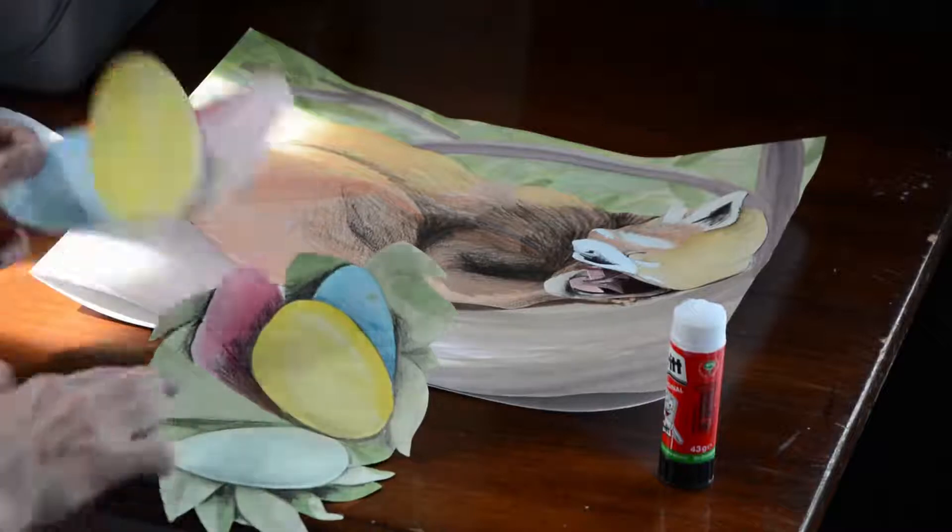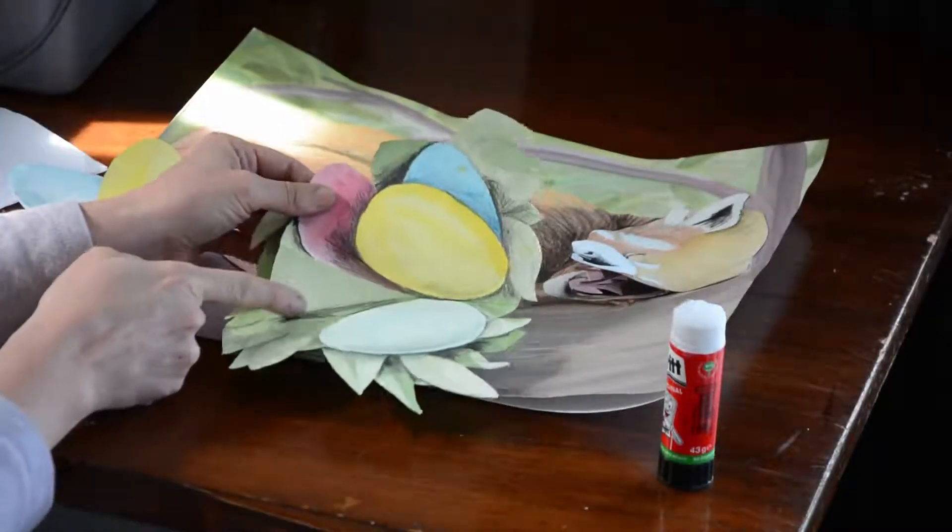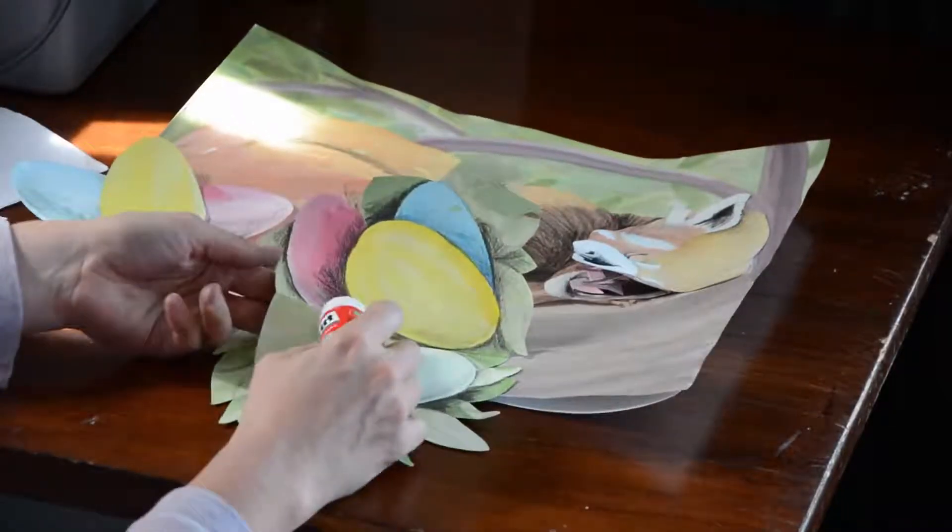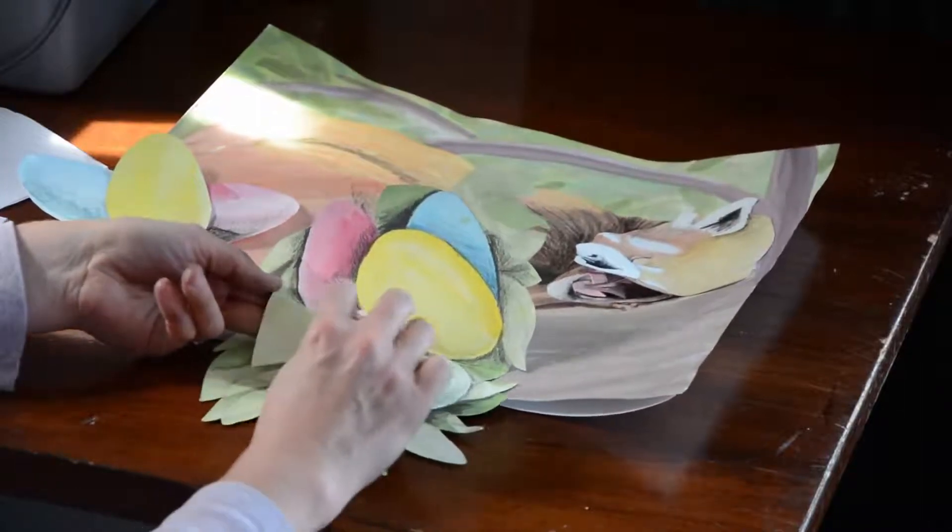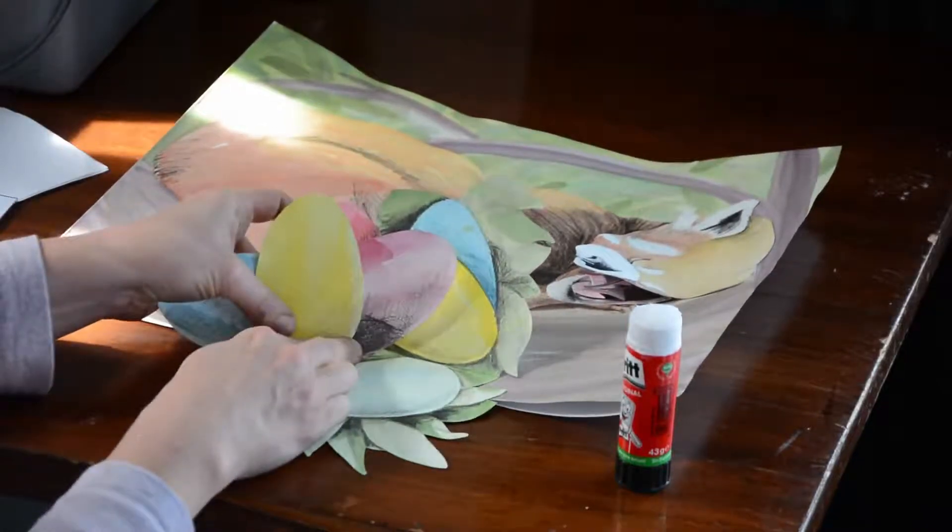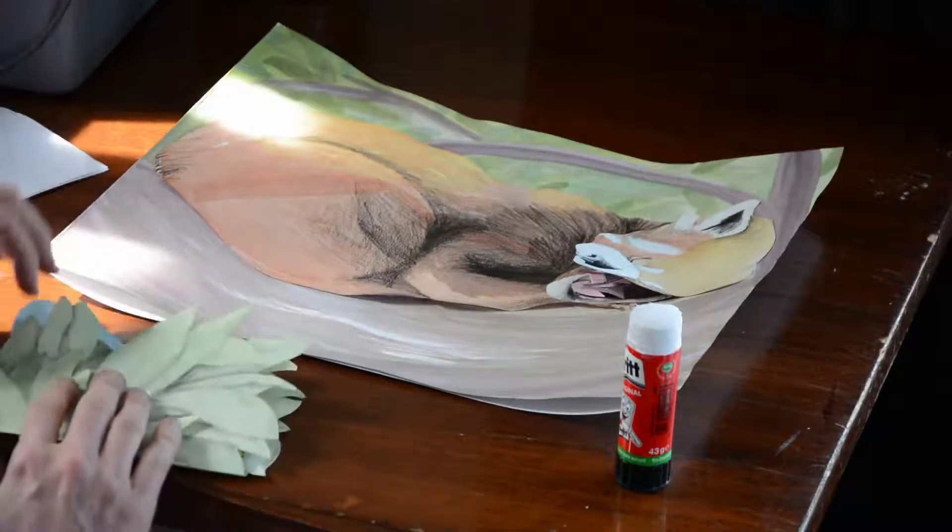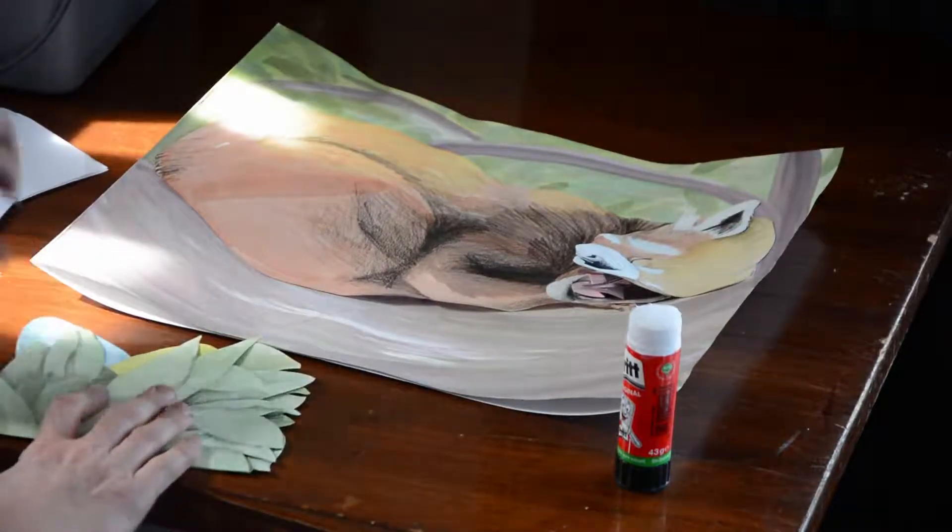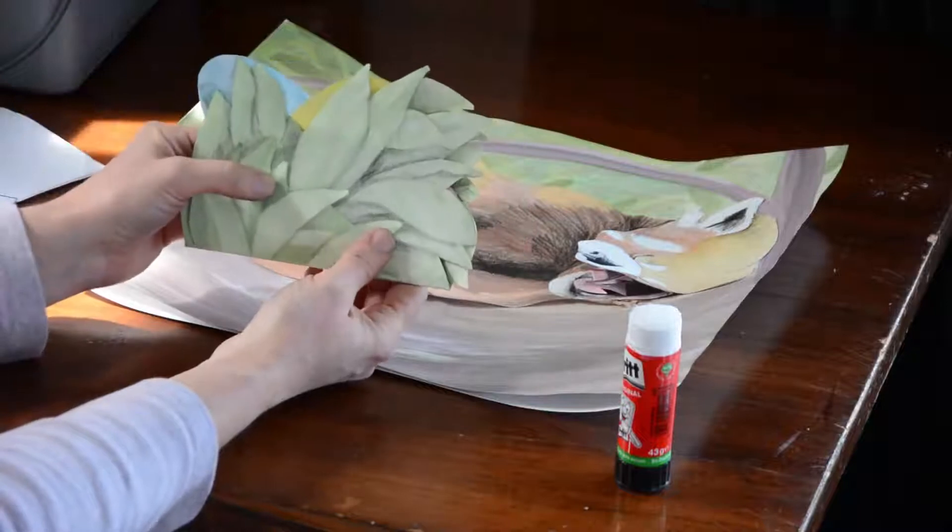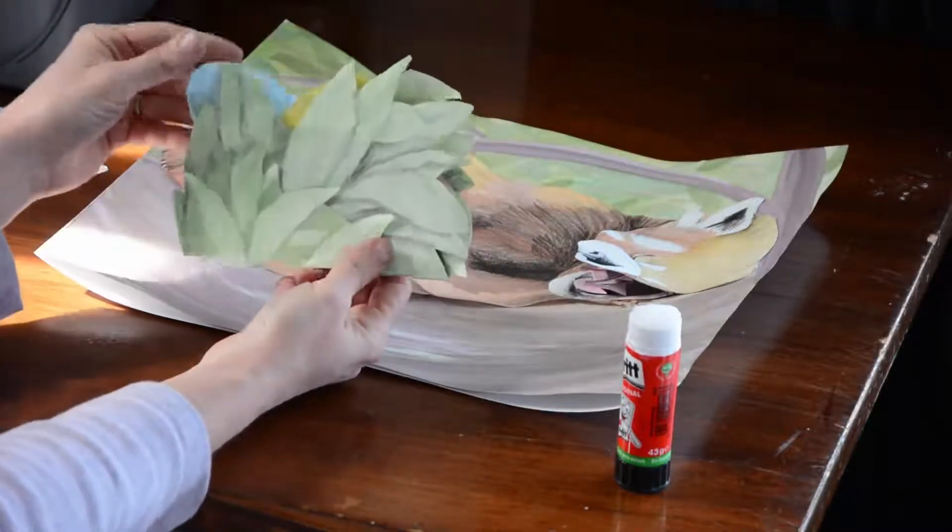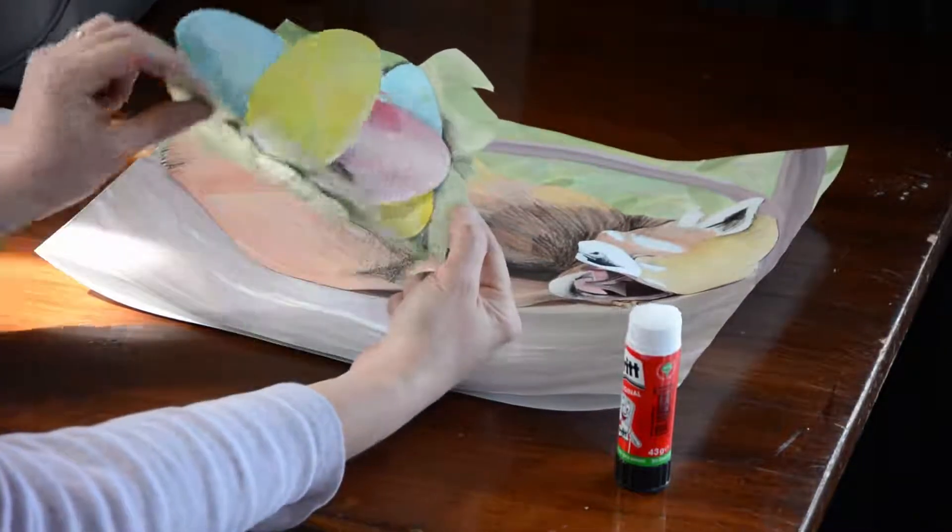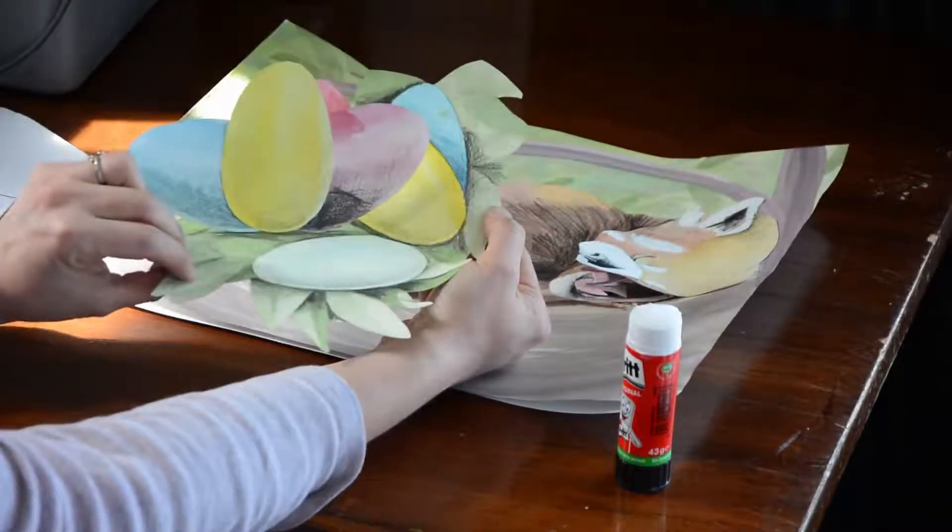Next my Easter eggs will be glued to this little face here. Now I want my eggs to be just barely popping up from the grass here, so I've made it so you can kind of see that there's something behind there working. And when you pull the flap down, the eggs pop up and around just like that.